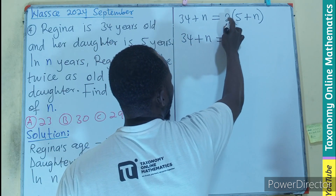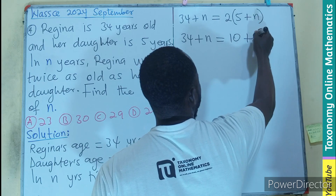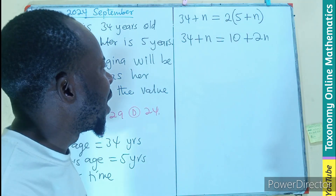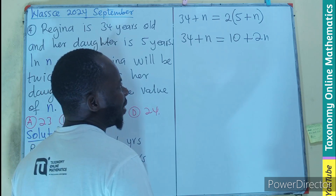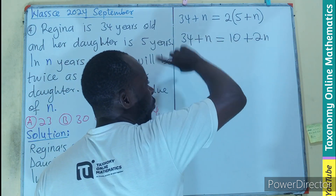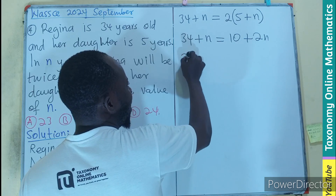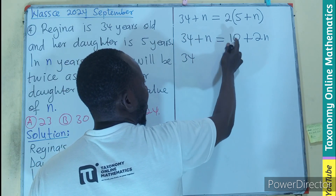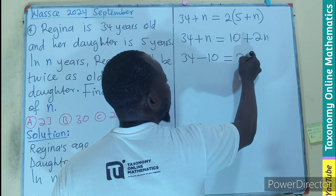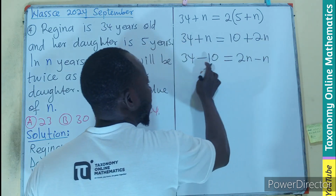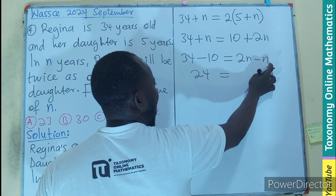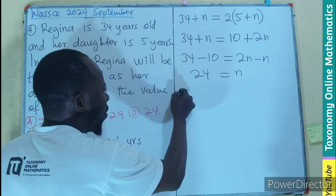Expanding gives us 34 plus n equals 2 times 5 plus 2n, which is 10 plus 2n. We group the like terms — since 2n is larger, we send the variable to the other side. Subtracting n from both sides and subtracting 10 from both sides gives us 34 minus 10 equals 2n minus n, so n equals 24.